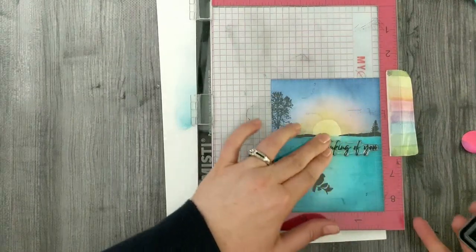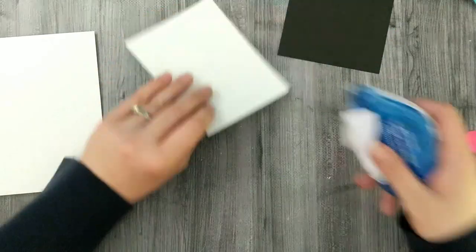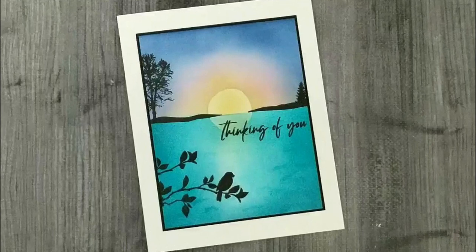I'm happy with the way that looks. I think it's so pretty. Then I'm going to stamp the sentiment 'thinking of you.' I'm going to adhere it to a black panel and adhere it to a white card base. And then that's it for this card.